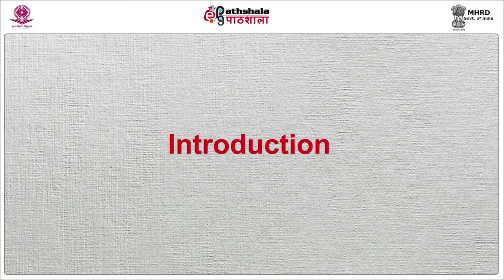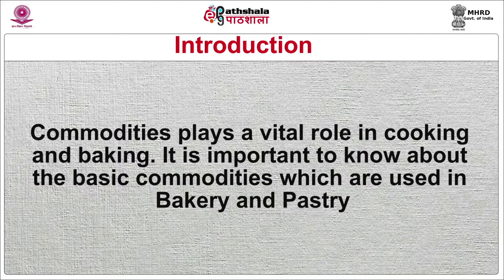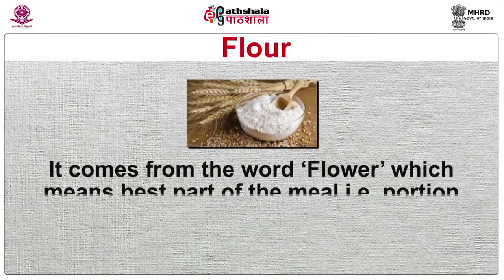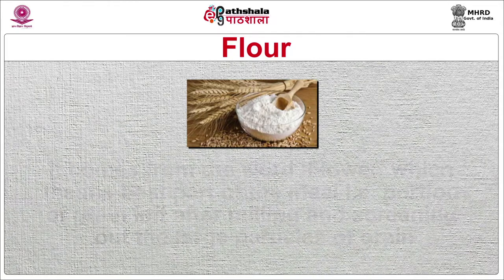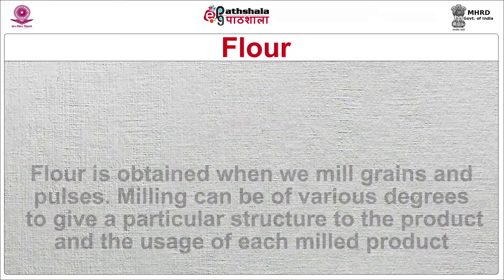Firstly I will discuss the introduction. Commodities play a vital role in cooking and baking. It is important to know about the basic commodities which are used in bakery and pastry. The first one is flour. It comes from the word 'flour' which means the best part of the grain — that is, the portion of grain left after milling and screening out the large particles. Flour is obtained when we mill grains and pulses. Milling can be of various degrees to give a particular structure to the product, and the usage of each milled product will be different from the other.